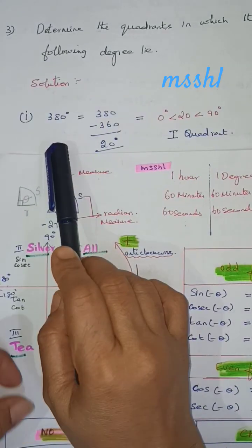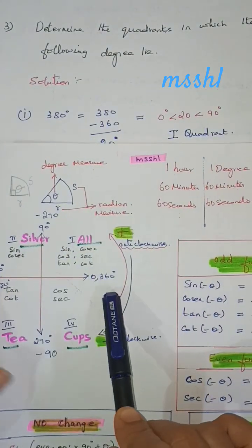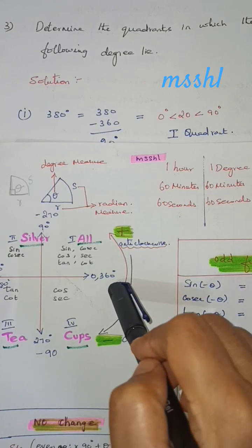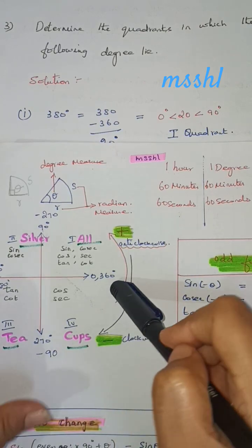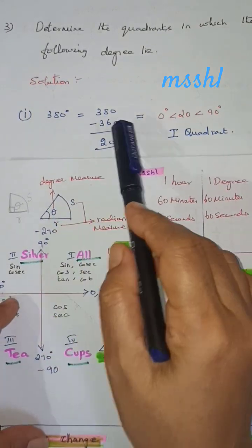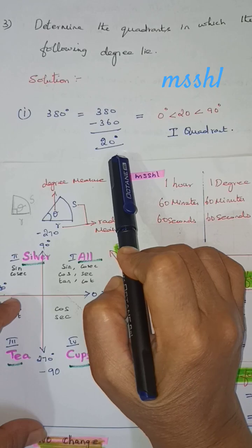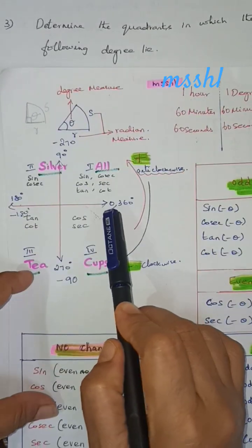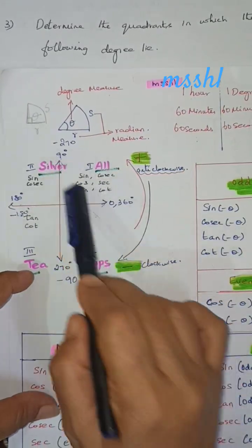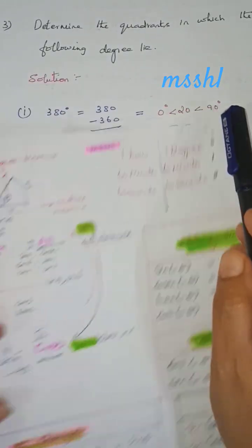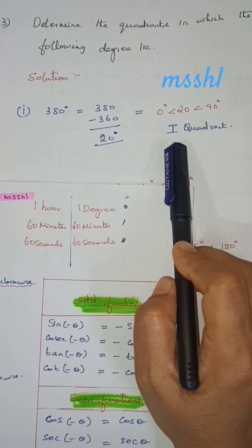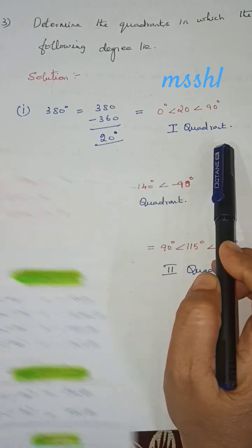This is 380 degrees. Since 360 is the maximum, we subtract: 380 minus 360 gives 20 degrees. So 20 degrees lies between 0 and 90 degrees, which is the 1st quadrant.